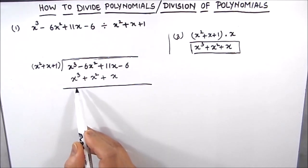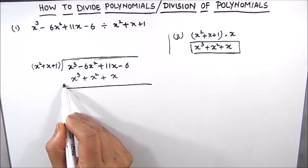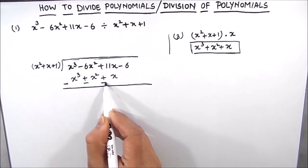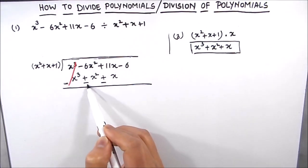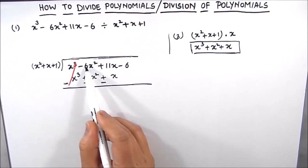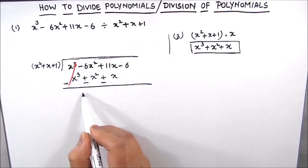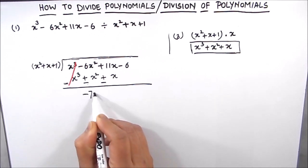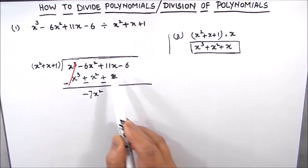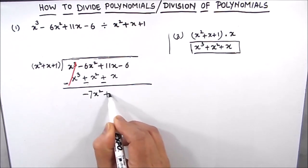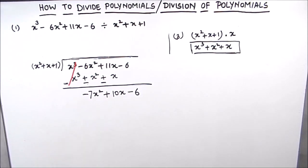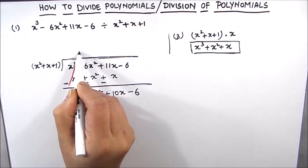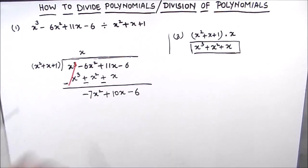As this is a subtraction, we change the signs. So x cubed minus x cubed gets cancelled. Minus x squared minus x squared gives minus 7x squared. And 11x minus x gives plus 10x. The rest of the terms we write as is. Our quotient so far is x.